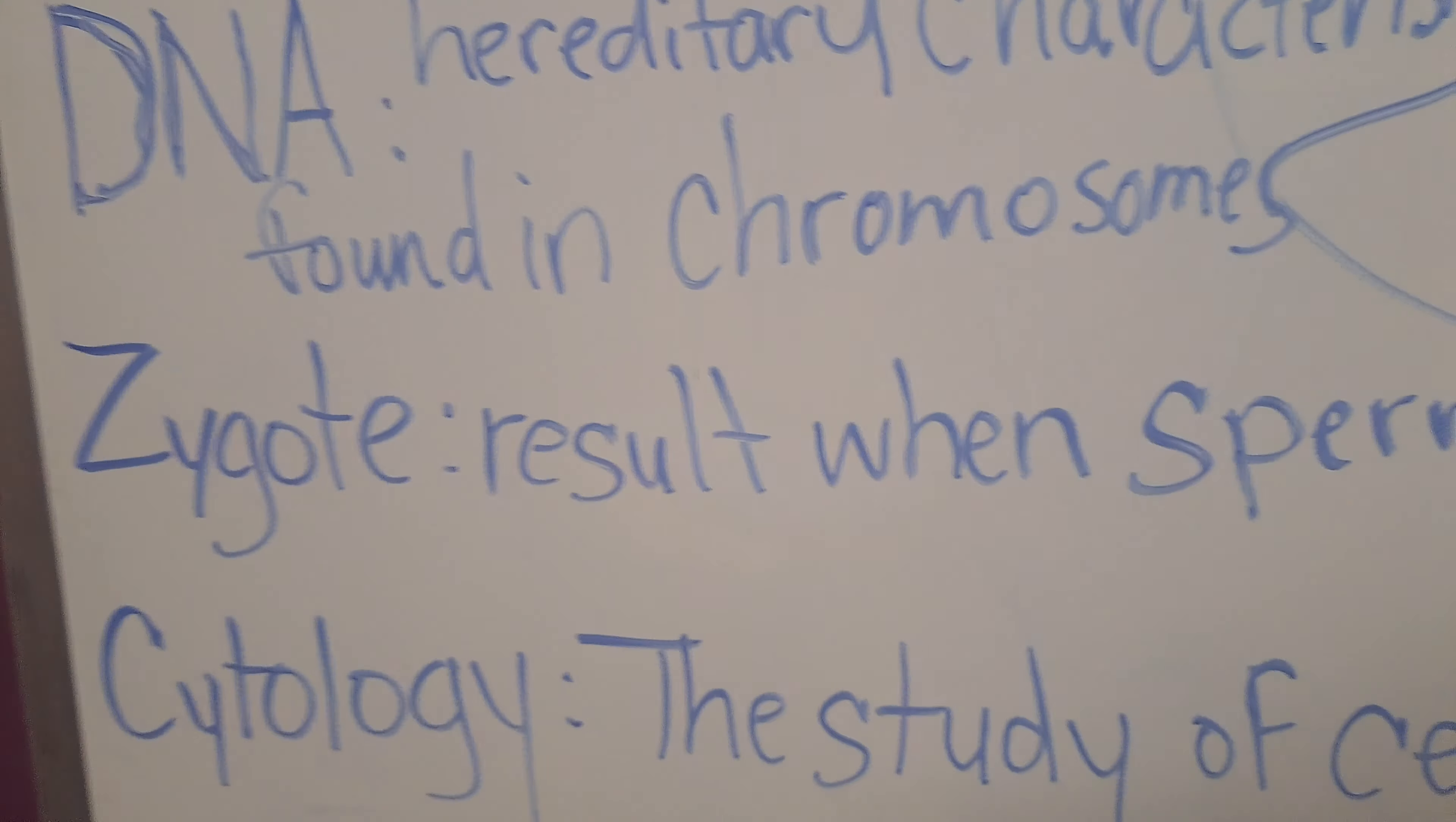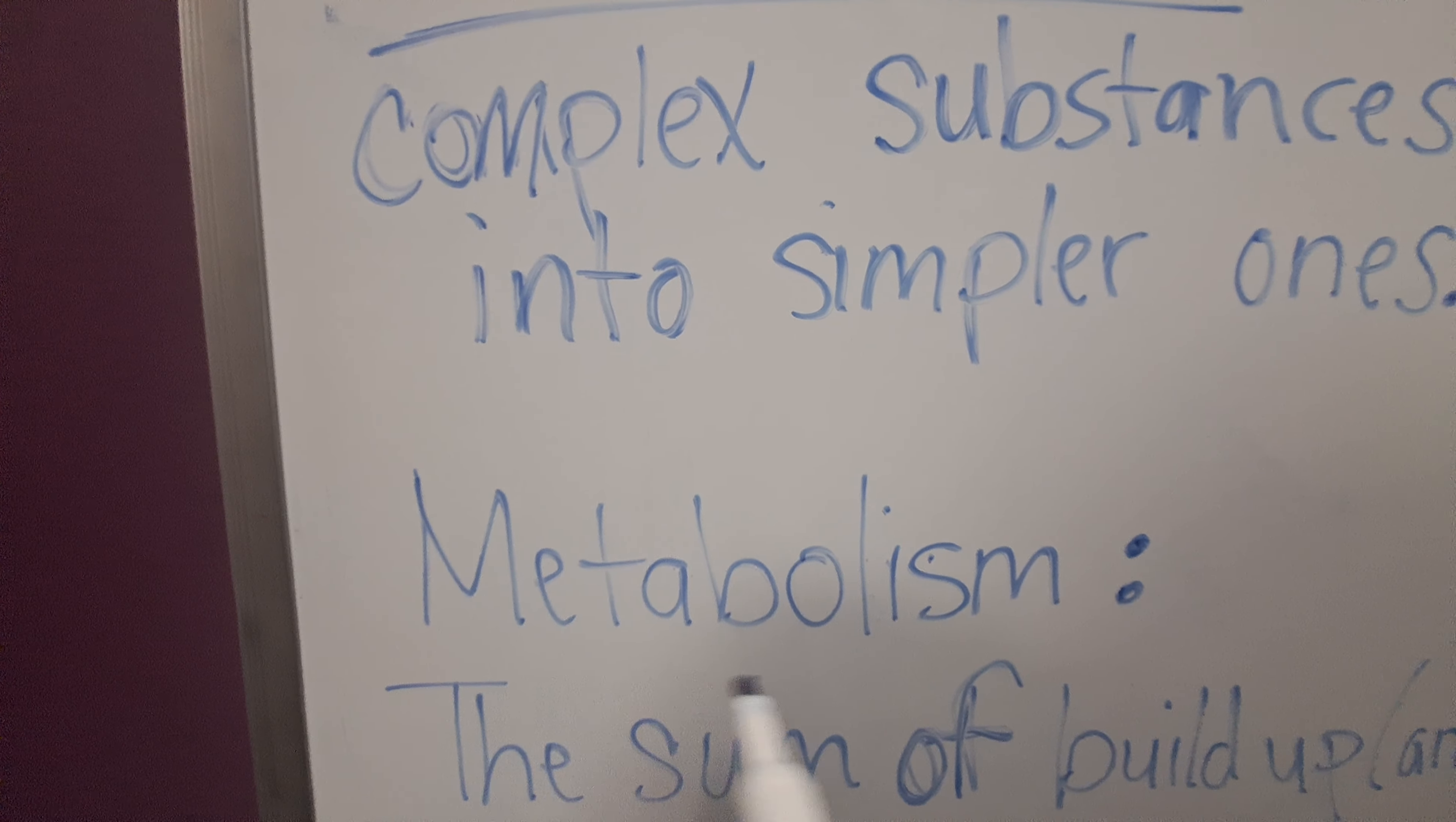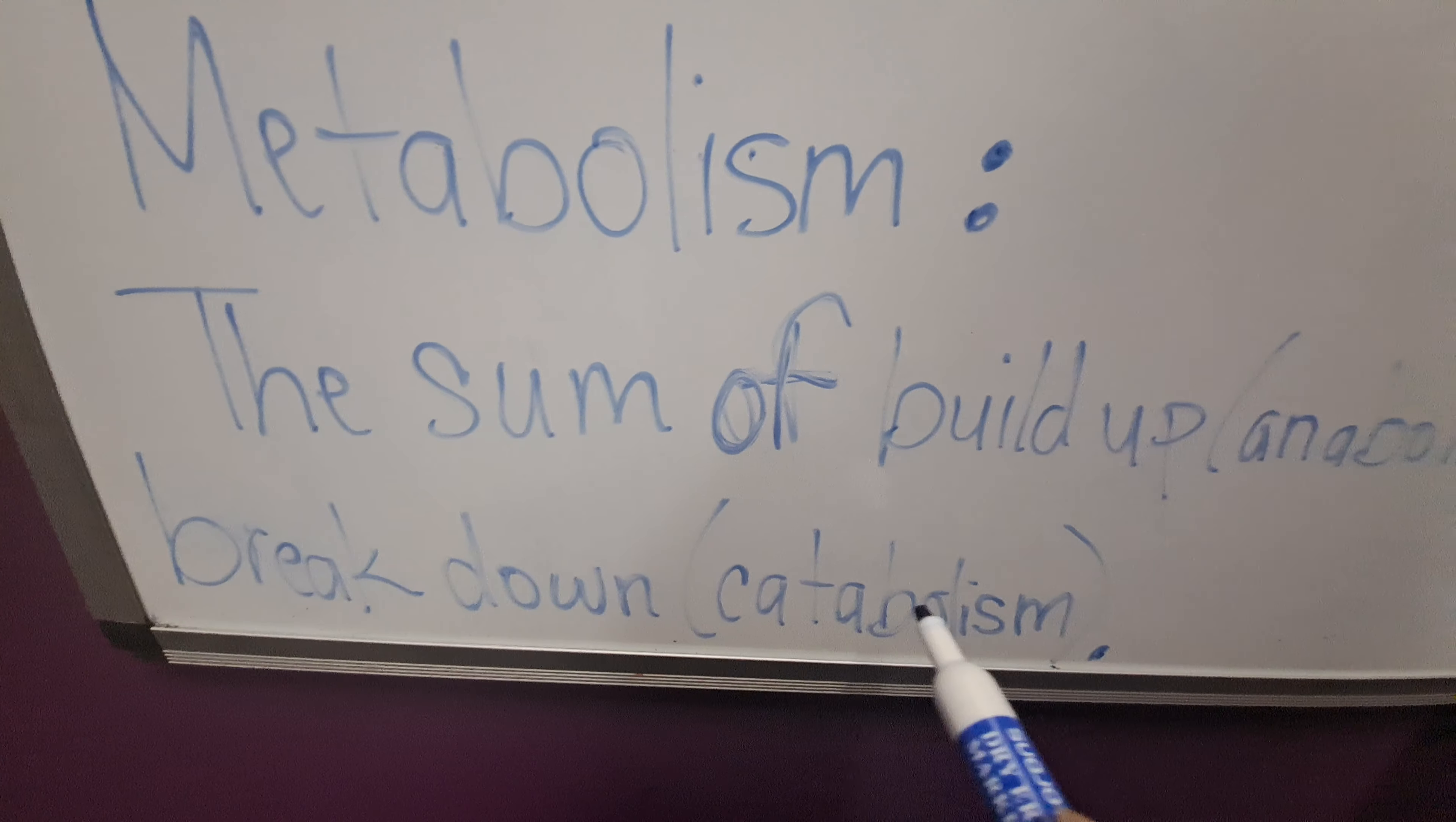For the next set of definitions we have anabolism. This is the build up of complex substances from smaller ones. Like if your body is building a protein, build up is anabolism. Catabolism is the breakdown of complex substances into smaller ones. So cata means breakdown, ana means build up. Now metabolism is the sum of the build up and the breakdown.